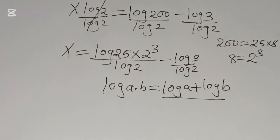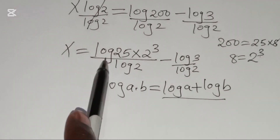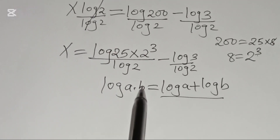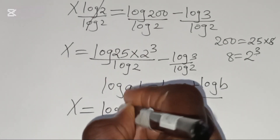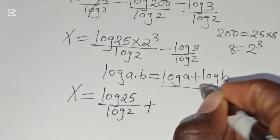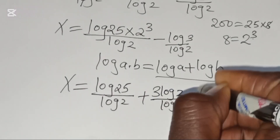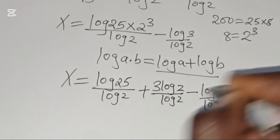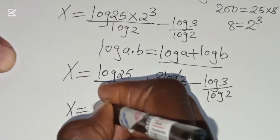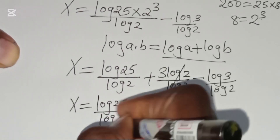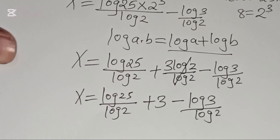So x equals log(25 × 2^3) divided by log(2), minus log(3) divided by log(2). Since log(25 × 2^3) = log(25) + log(2^3) = log(25) + 3·log(2), we get x = log(25)/log(2) + 3 − log(3)/log(2).